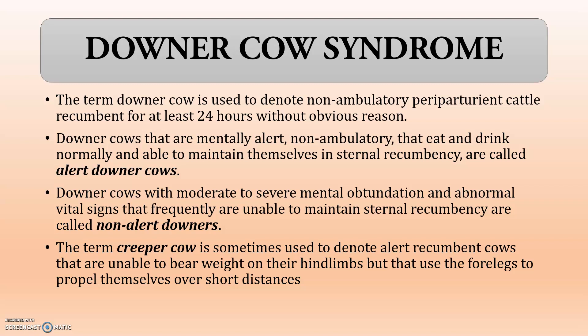Non-Alert Downers have moderate to severe mental depression that can be due to toxic chemicals which may have accumulated in the blood and attacked the brain. Abnormal vital signs will be the main frequent pattern in case of Non-Alert Downers. There is also another term — Creeper Cow — which is used to denote alert, recumbent cows that are unable to bear weight on their hind limbs.